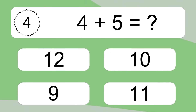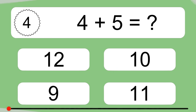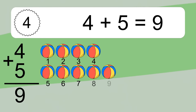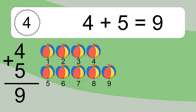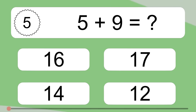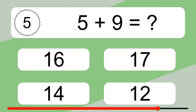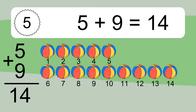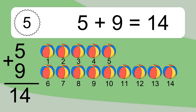4 plus 5 equals what? 4 plus 5 equals 9. Let's count it. 1, 2, 3, 4, 5, 6, 7, 8, 9. 5 plus 9 equals what? 5 plus 9 equals 14. Let's count it. 1, 2, 3, 4, 5, 6, 7, 8, 9, 10, 11, 12, 13, 14.